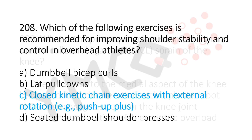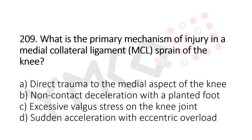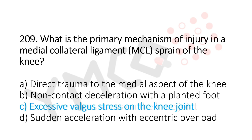Question 209: What is the primary mechanism of injury in a medial collateral ligament sprain of the knee? Option A: direct trauma to the medial aspect of the knee. Option B: non-contact deceleration with planted foot. Option C: excessive valgus stress on the knee joint. Option D: sudden acceleration with eccentric overload. The answer is option C, excessive valgus stress on the knee joint.